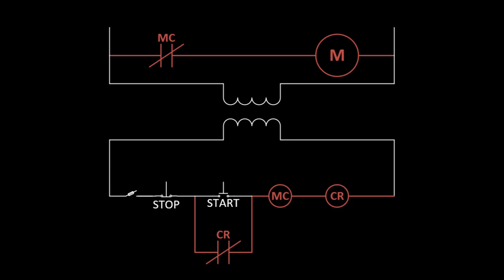After a loss of power, the circuit must be manually re-energized, giving the operator a chance to ensure that the area is safe before restarting the machinery.